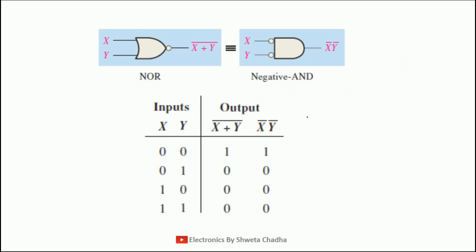Let us verify the same expression with the help of a truth table. We need to verify that the NOR gate is equivalent to the negative AND gate. What is a negative AND gate? Before providing the input to the AND gate, we are going to give the inputs to the negated signals.